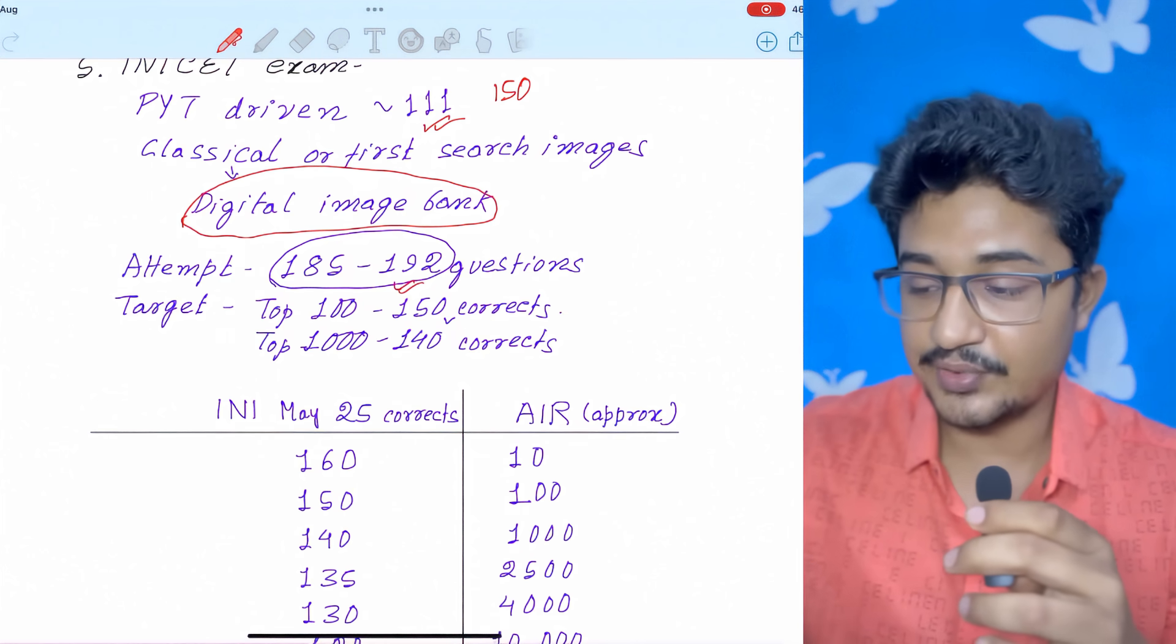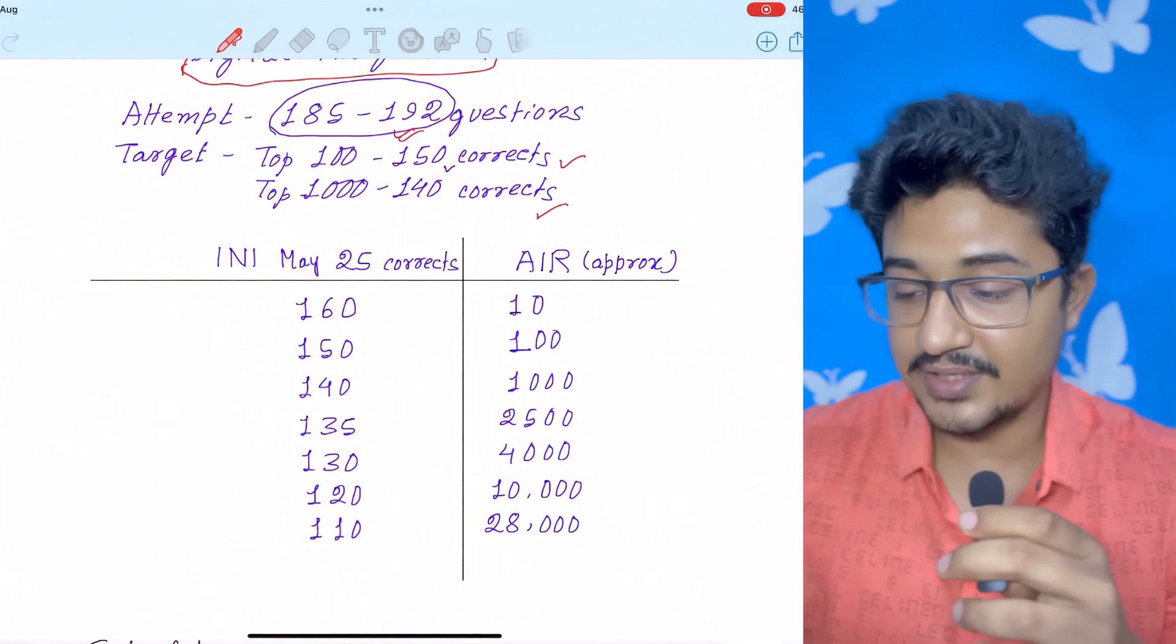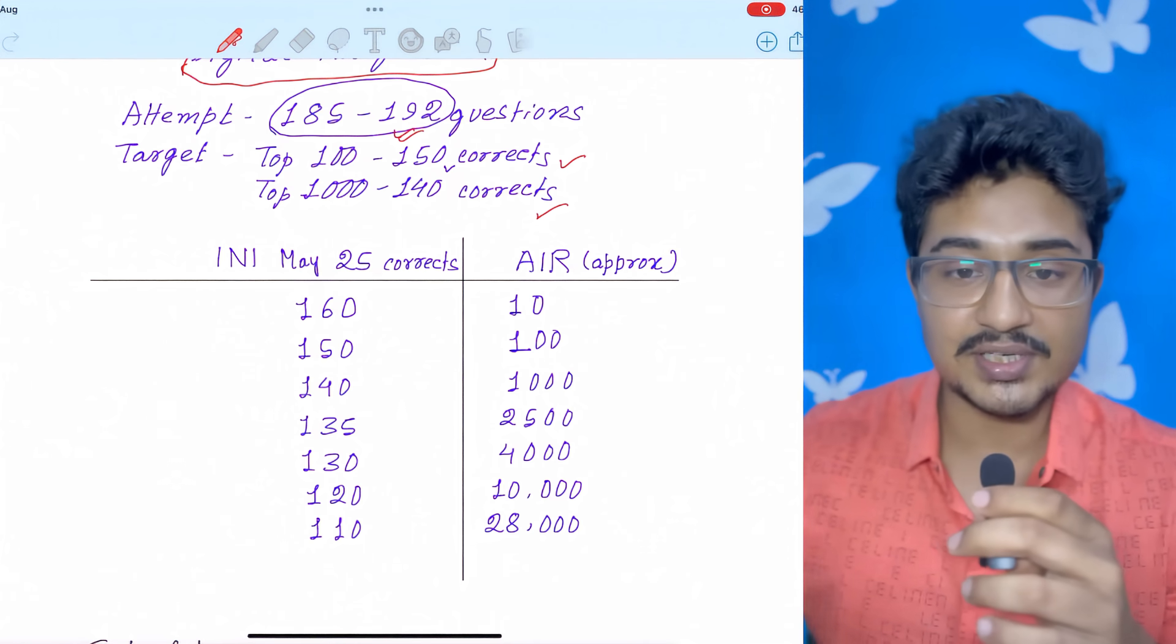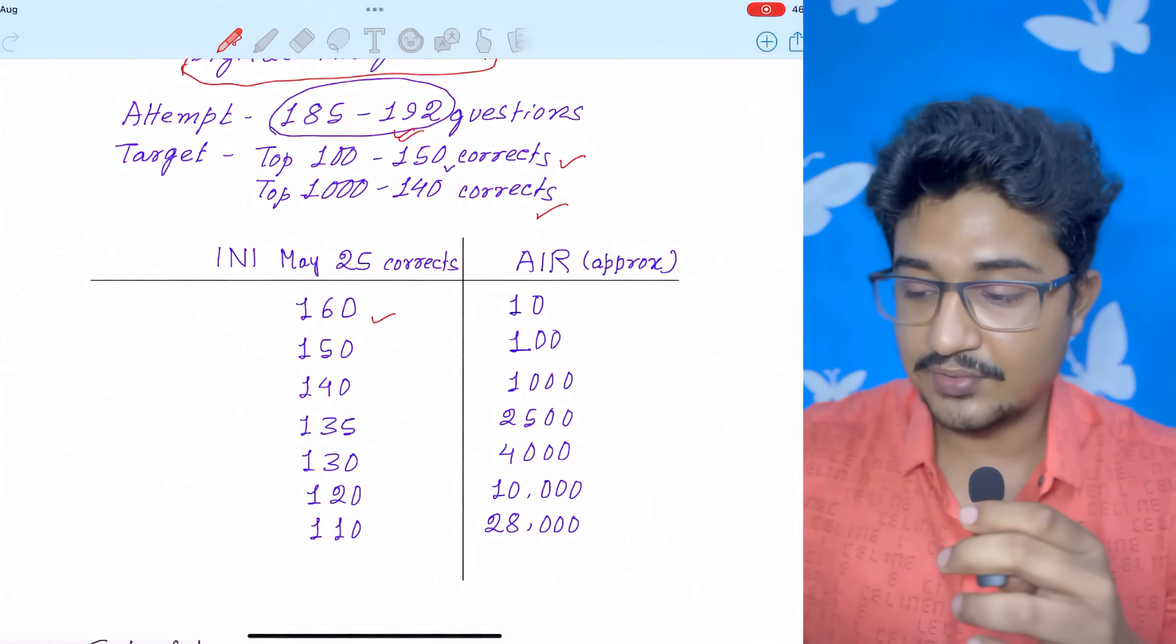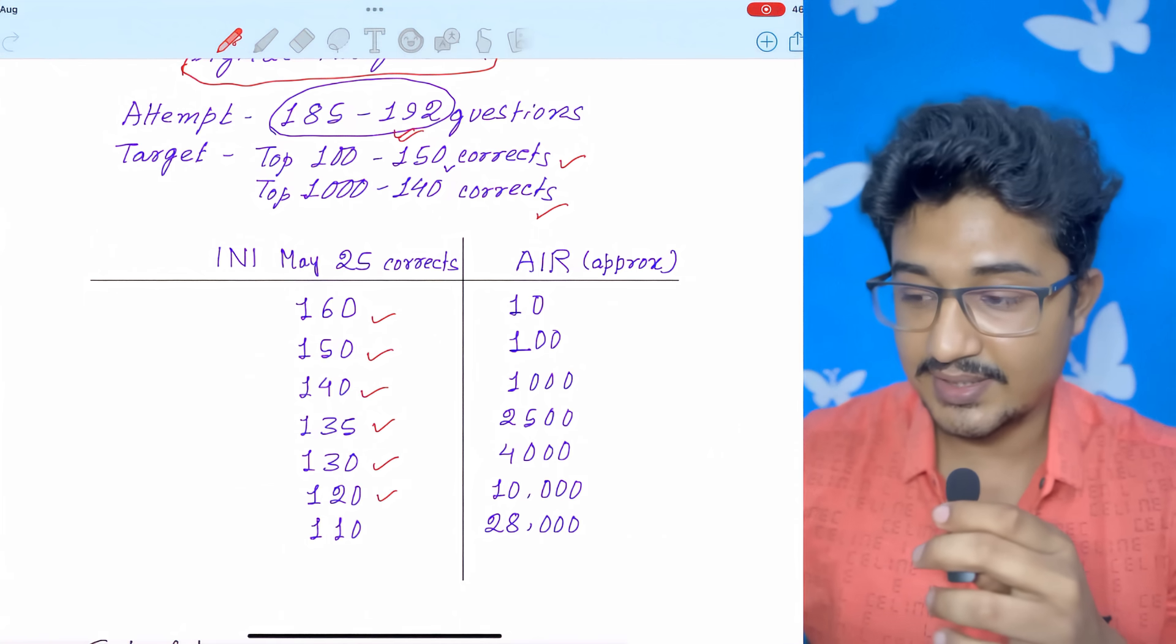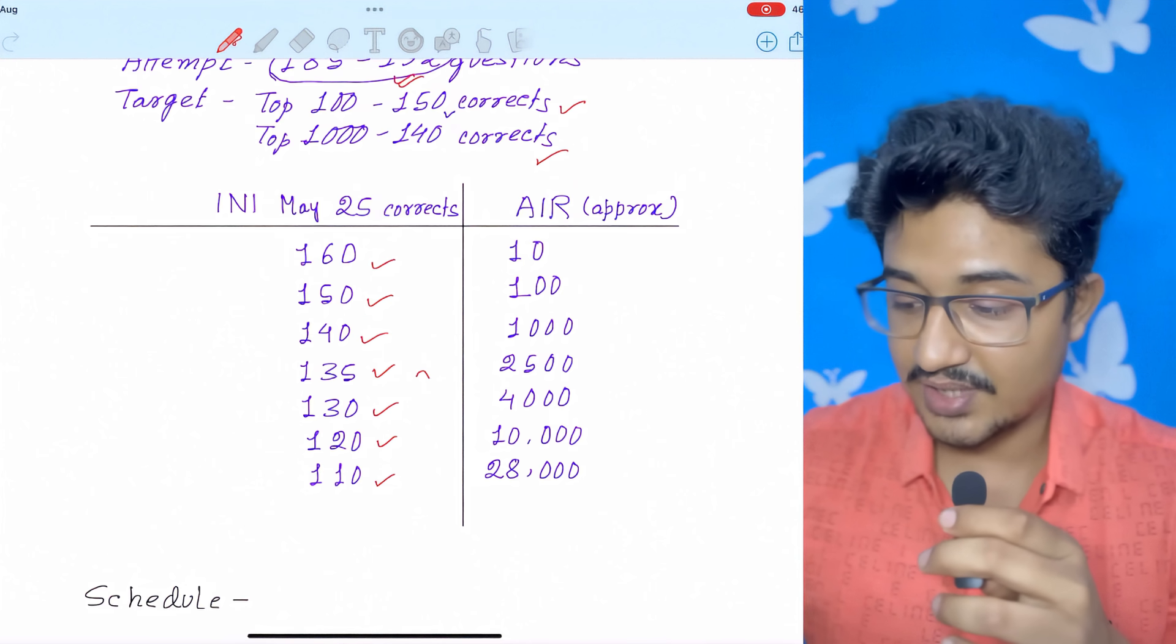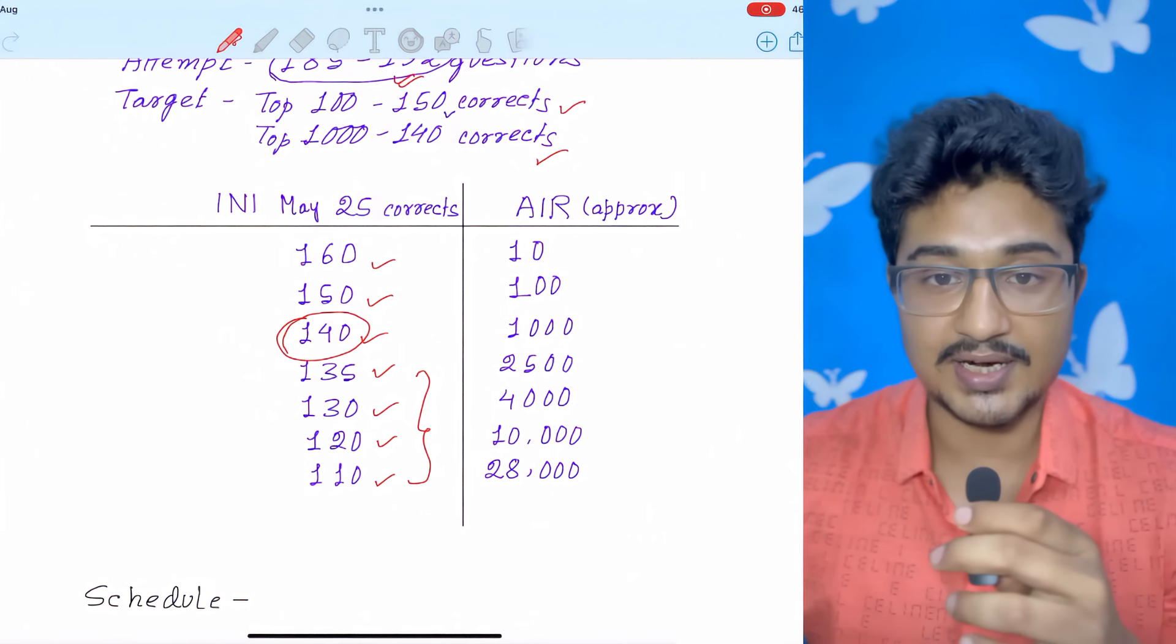For top 100 rank, if you are targeting, 150 corrects is the goal. For top 1000 rank, 140 corrects is the goal. Because I am giving you stats of INI May 2025 corrects versus the approximate AIR. Because if you commit more mistakes, then it will drop this is the approximate. For top 10 rank, 160 corrects. Top 100, it was 150 corrects. Top 1000, it was 140 corrects. Top 2500, it was 135. 4000, it was 130. 10,000, it was 120. And 28,000, it was 110 corrects. So, you can see the clustering zone starts after the 135. So, target 140 corrects. Then you can get your desired branch from the INICT.